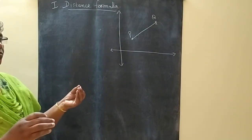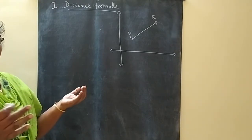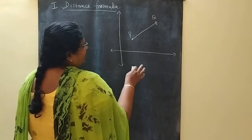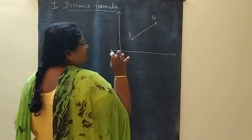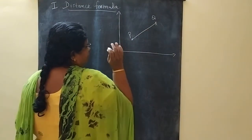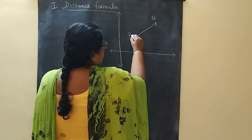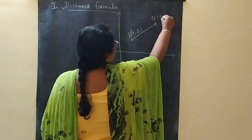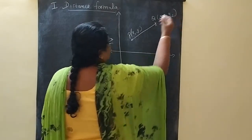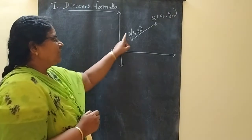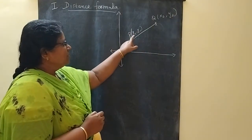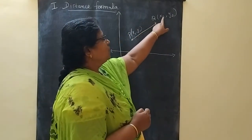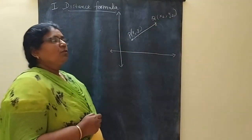After deriving the formula, we can substitute any numbers. Now, I am taking these two points lying in the first quadrant. I am taking point P as (X1, Y1) and point Q as (X2, Y2). A point always contains two values — this is called the X coordinate, and this is called the Y coordinate.